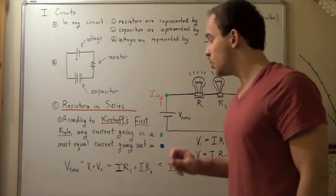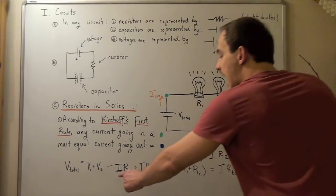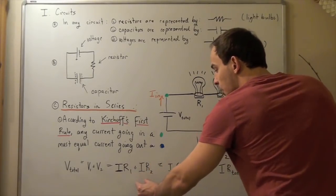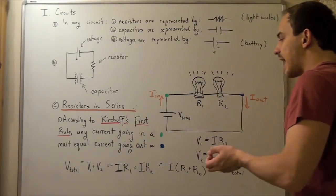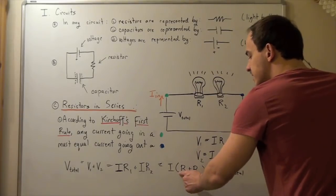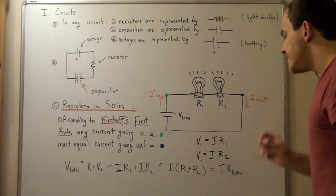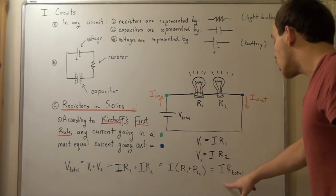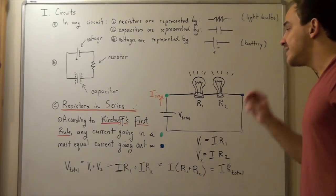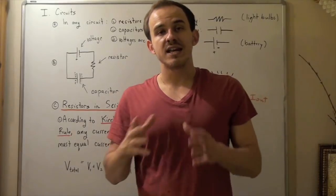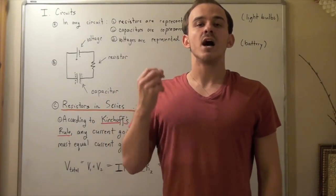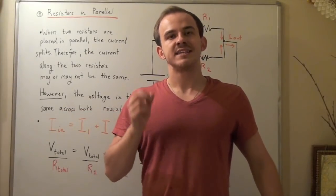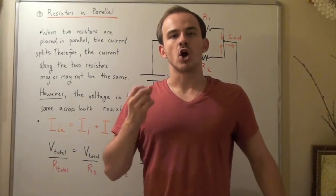Representing V1 and V2 in terms of current and resistance: V total equals I times R1 plus I times R2. We notice that each term contains an I, so we factor it out: V total equals I times (R1 plus R2). We see that the total resistance of our system when resistors are in series is simply R total equals R1 plus R2. Whenever you have two or more resistors in series, to find the total resistance we simply add up the resistances.